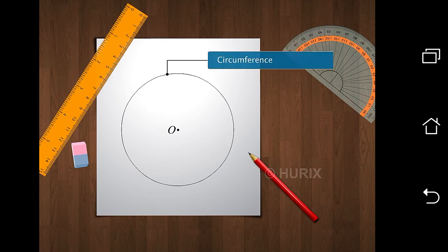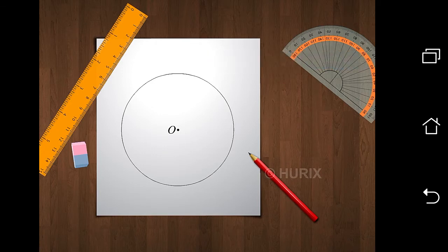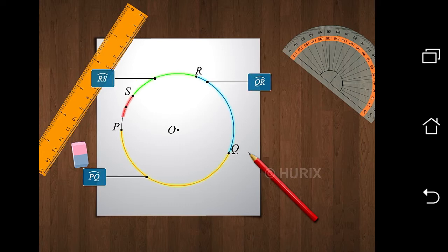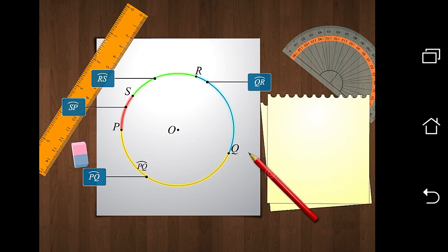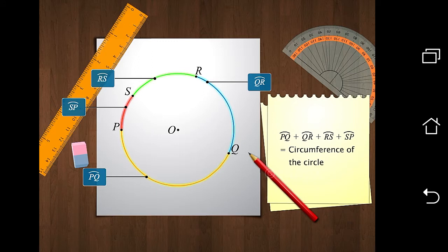Do you know that a circumference is the longest arc of a circle? A circumference is in fact made up of arcs. For example, the circumference of this circle is made up of arcs PQ, QR, RS and SP. In other words, if we add up the lengths of all these arcs, we get the circumference of the circle.